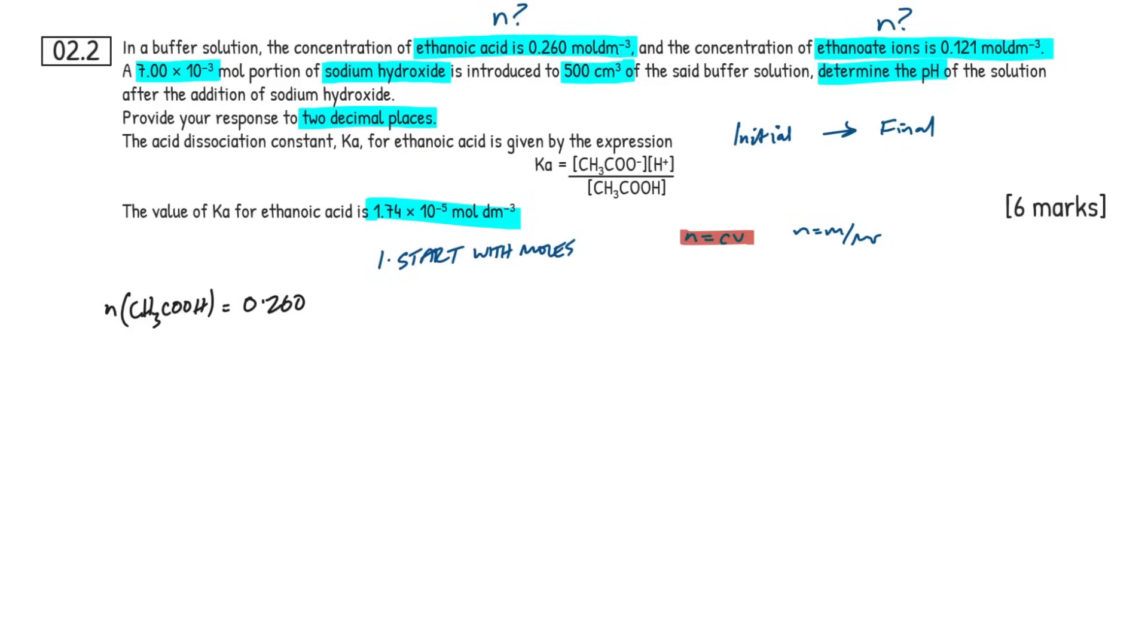And this is going to be the same with every buffer calculation. So as I said, start with the moles. Let's look at the moles of our ethanoic acid to begin with, CH3COOH. This is going to be a very common weak acid that you use for these acids and bases buffer calculations. So we've got a concentration here, so I'm going to use my expression, so 0.260. It's in moles per decimetre cubed, so there's no reason to convert the units.